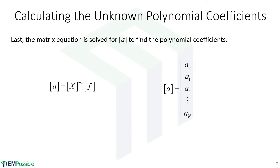Given our matrix equation, we can solve this for our polynomial coefficients. It's X inverse times our function values. Then we can read off all the polynomial coefficients and we've done our fit. That's really it. We build the X matrix, we put our function values in a column vector, we do the backward divide, and there we are at our polynomial coefficients.